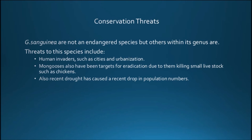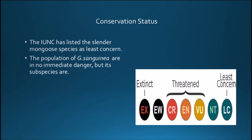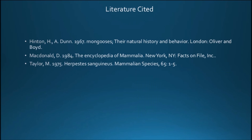Mongooses have also been targets for eradication due to killing livestock such as chickens and other small poultry. Recent drought has also caused a drop in population numbers. The IUCN has listed the slender mongoose as least concerned — the population is in no immediate danger, but some subspecies are. Thank you for watching.